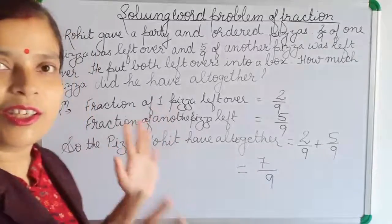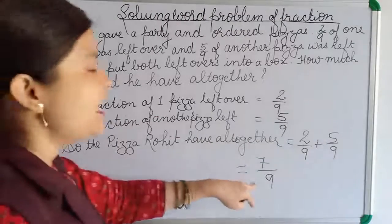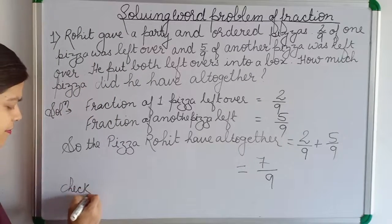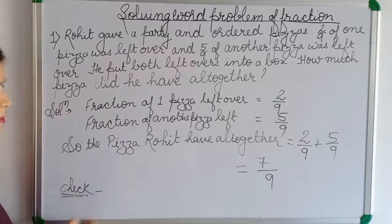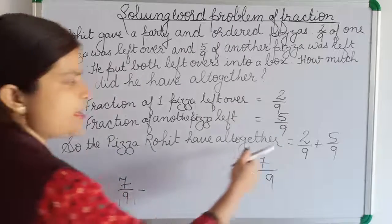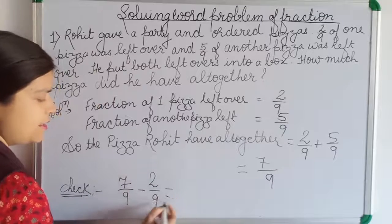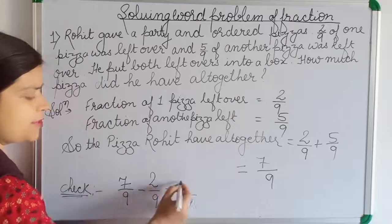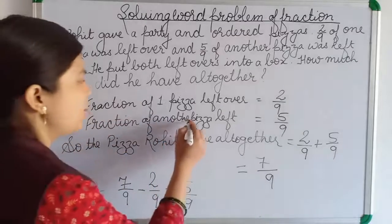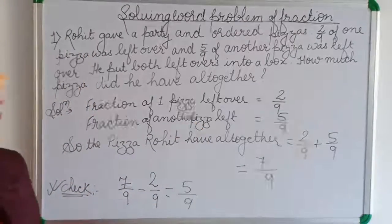Now let's check whether the calculation is right. From the total 7 by 9, we subtract what was left over in one pizza, which is 2 by 9. We get 7 minus 2 equals 5, so 5 by 9 — which is the part of the pizza left in the other pizza. So the calculation is correct.